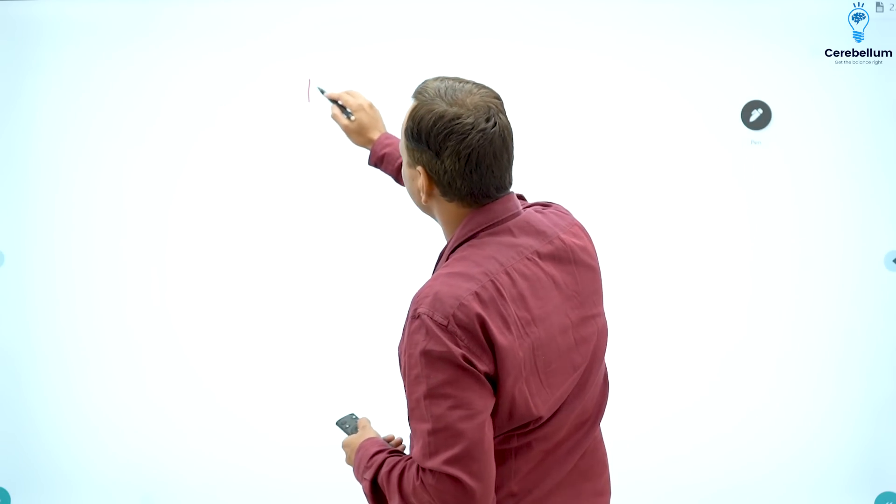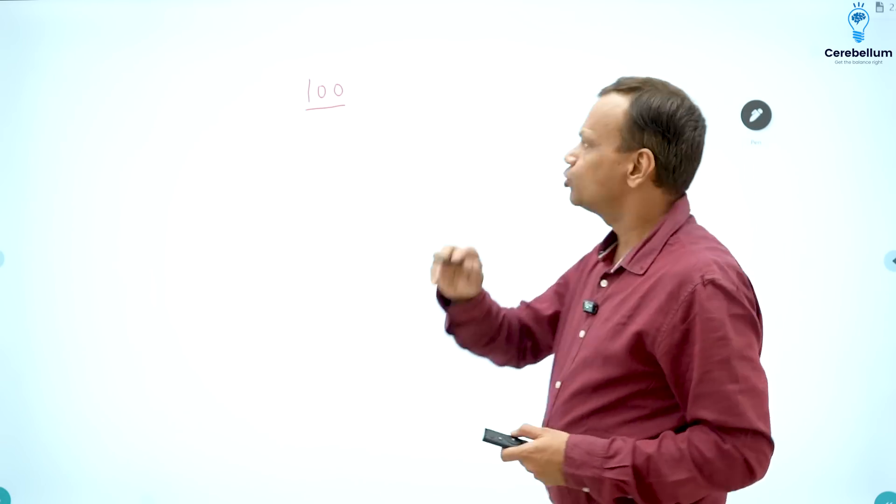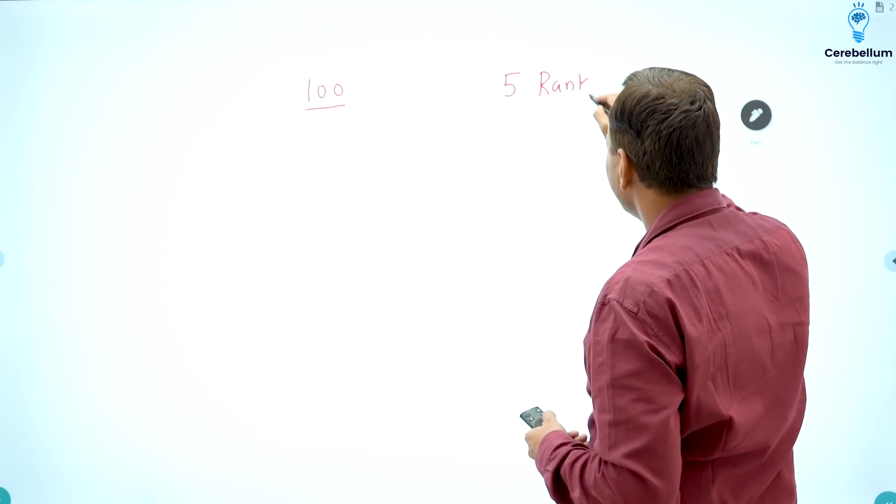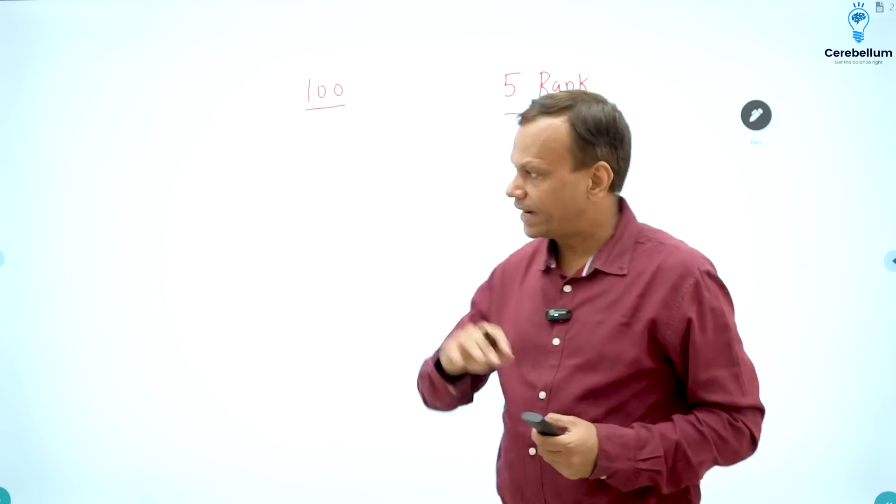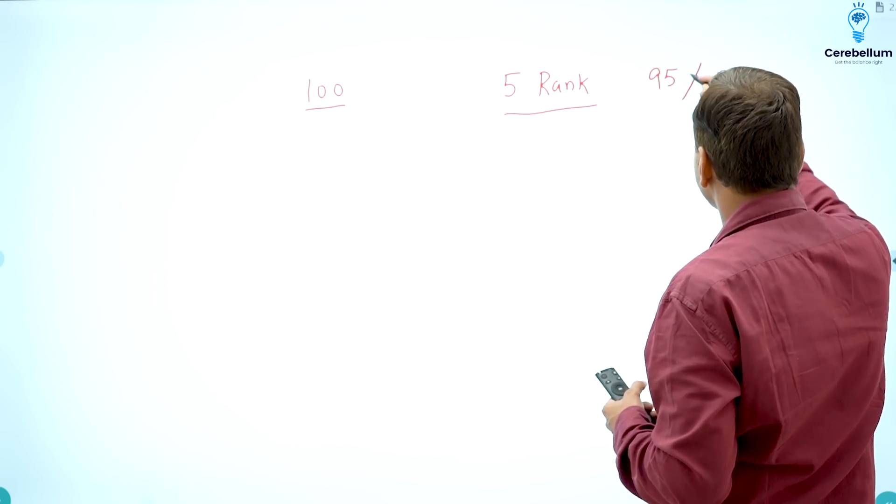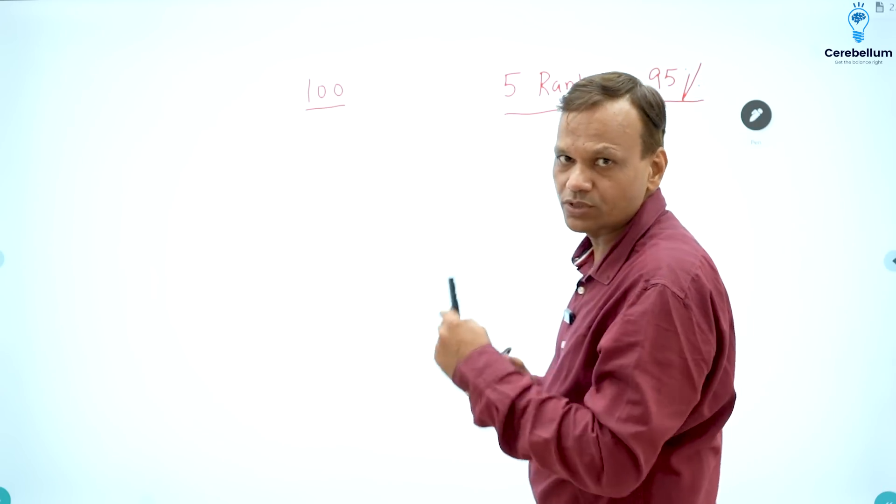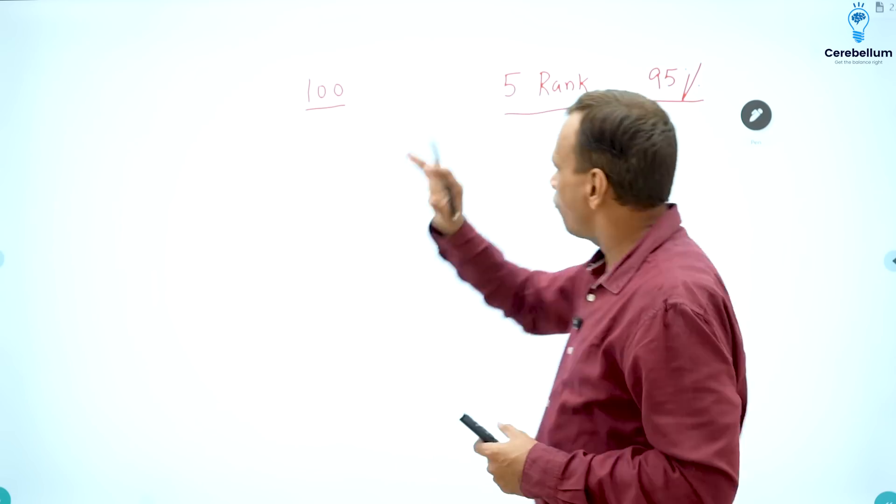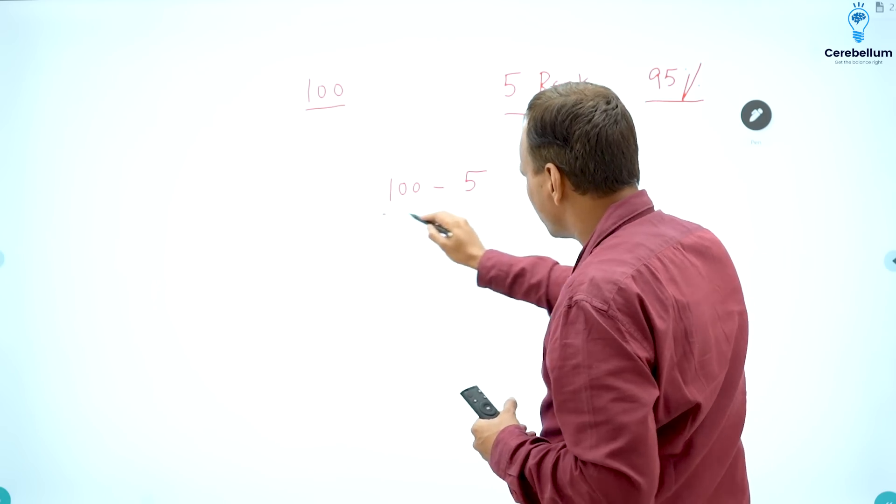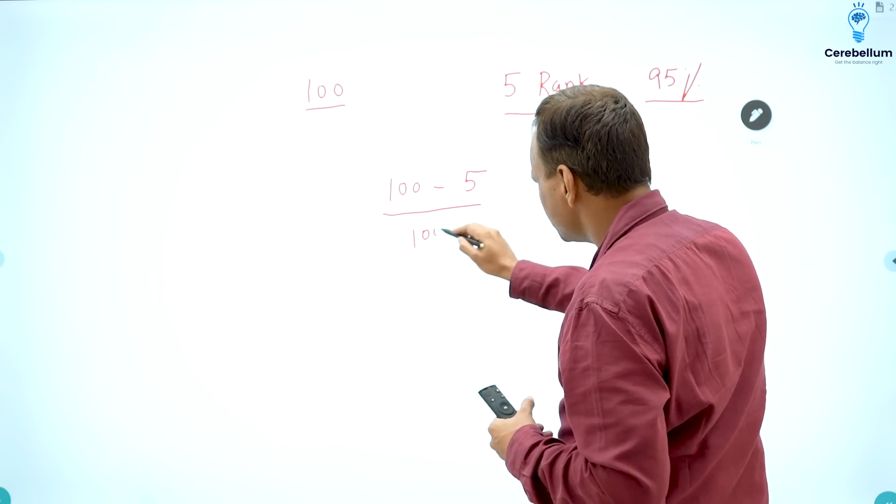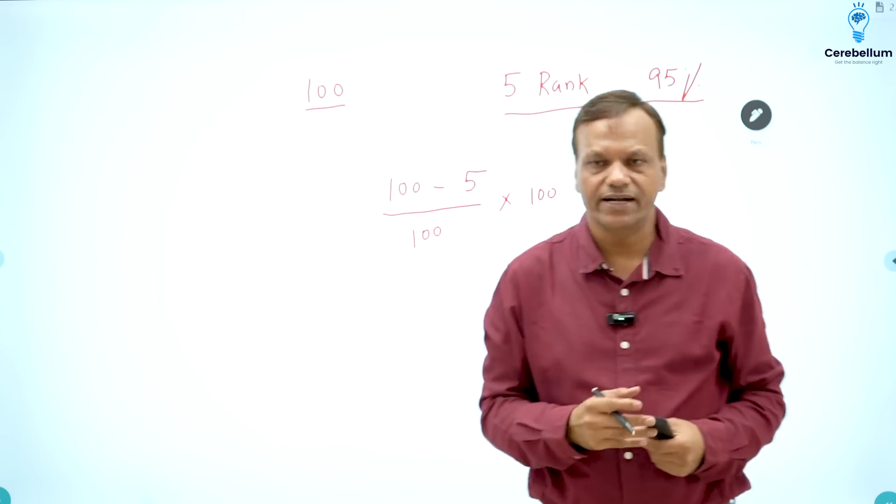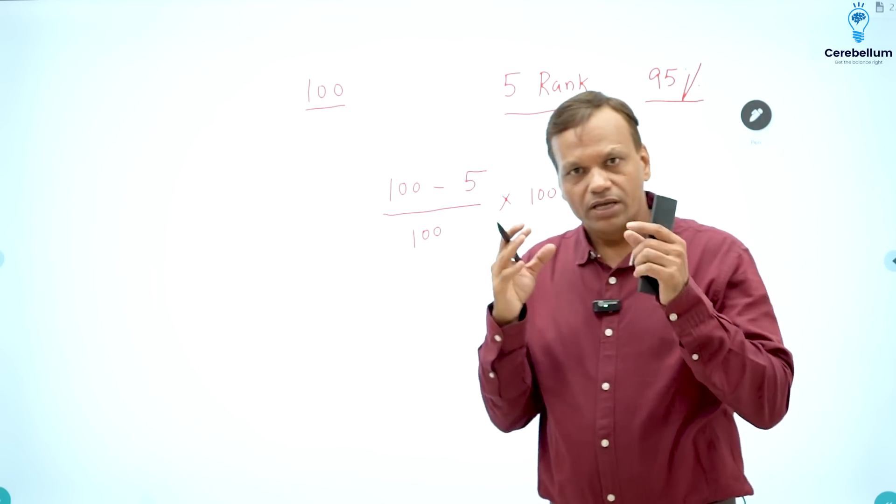Suppose 100 students appear in an exam and you get rank five. So what does that mean? 95 people are below you. So 95 out of 100, that means 95 percentile you will get. Percentile tells how many percentage of students are below you. So how we will calculate the percentile is total number of students minus your rank, divided by total number of students, and then make it percentage by multiplying it by 100. I have taken the numerator, denominator 100 to make it easy.